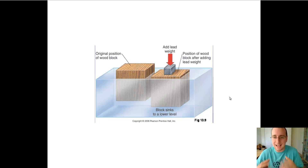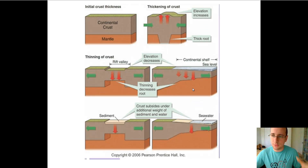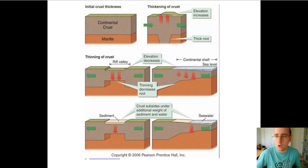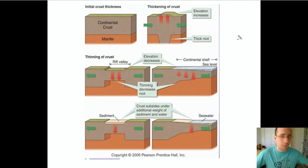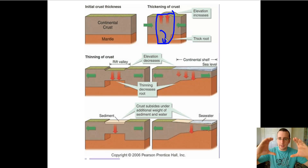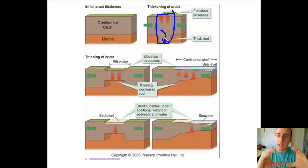The opposite happens if you remove weight — the object becomes less dense and is uplifted by the buoyancy force. Now applying this to the continents: if you take the original continental crust and fold it due to tectonic plate pressure or squeezing, the crust becomes thicker in that area, which means it becomes denser. Since it became denser, you're going to have a thicker root — just like adding weight to a floating block, it will subside underneath. That creates those roots or downward extensions in the surface of the earth.